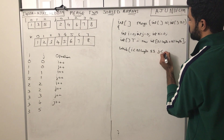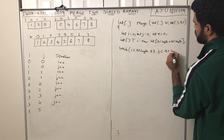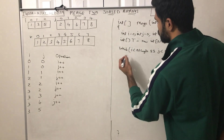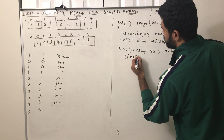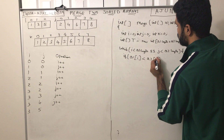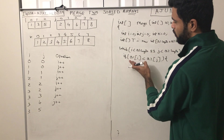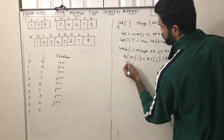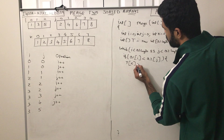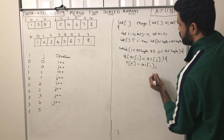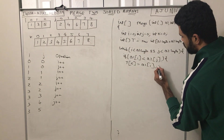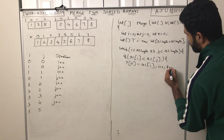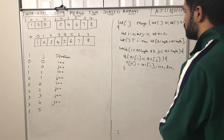Inside the while loop, I check which element is less. If a1[i] is less than a2[j], then I add the element from the first array to the temporary array: t[k] = a1[i]. Since I added the element from a1, I increment i++. I also increment k++ for the temporary array on each iteration.